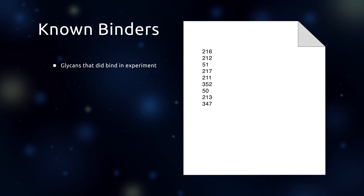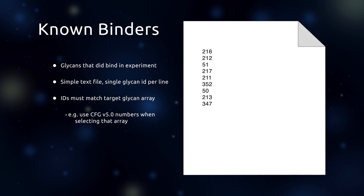If you do want to upload a list of known binders, simply create a text file with one glycan ID per line. These IDs must match the IDs in the glycan array you select. For example, if you select CFG version 5.0 in the configuration step, use the glycan IDs from that array.